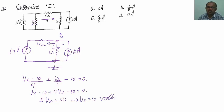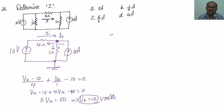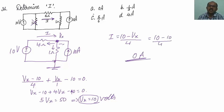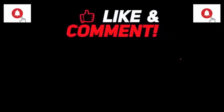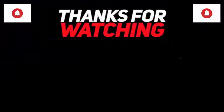With Vx equals 10 volts, the current I equals (10 minus Vx) divided by 4, which is (10 minus 10) divided by 4, equals 0 amperes. Hence option A is correct. See you in the next video — share with your friends and subscribe to my channel Crane India. All the best for your competition. Thank you.